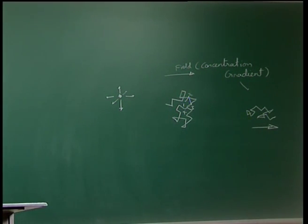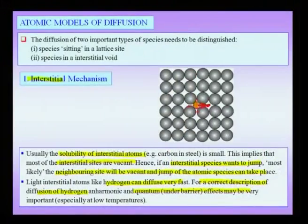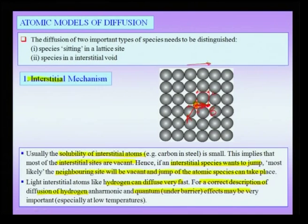An atom sitting in its lattice position vibrates because of temperature, and because of these vibrations, once in a while it will jump over the barrier and get into a neighboring position — for instance from site A to site B to site C. In the absence of a concentration gradient there will be no net flow. The most important thing to note is that most of the interstitial voids are vacant because the solubility of most interstitial atoms in a given system is small — for instance, carbon has very low solubility in BCC iron.